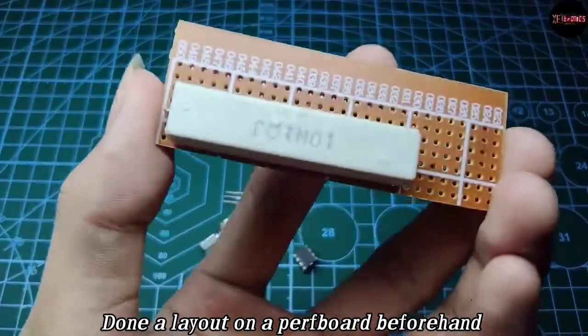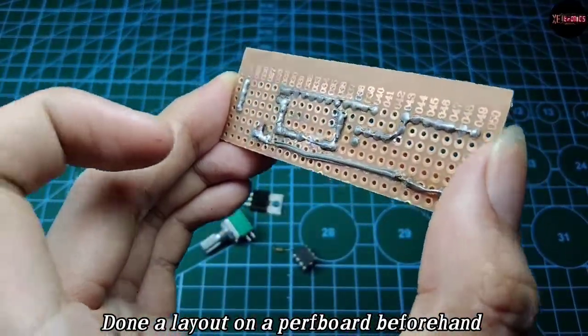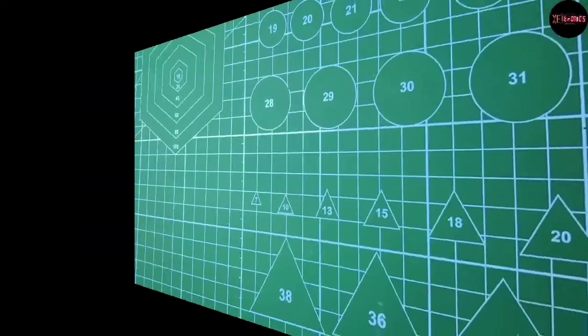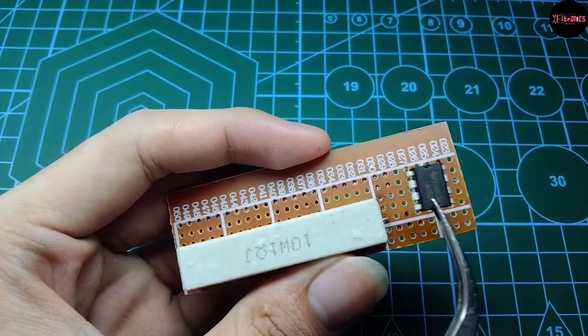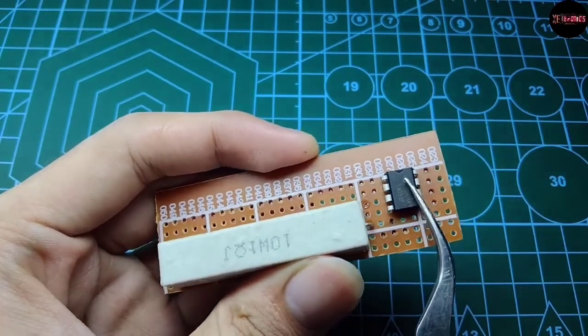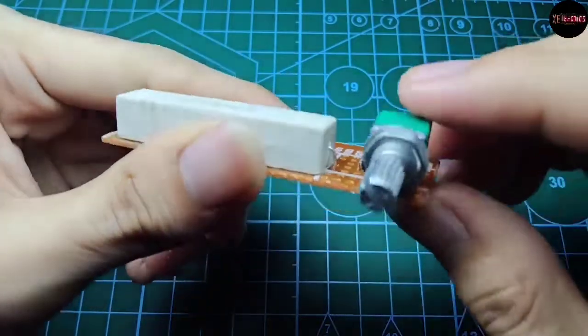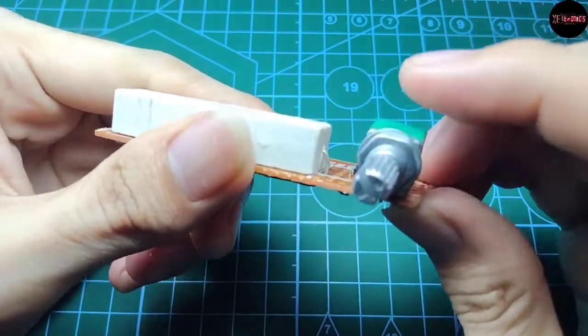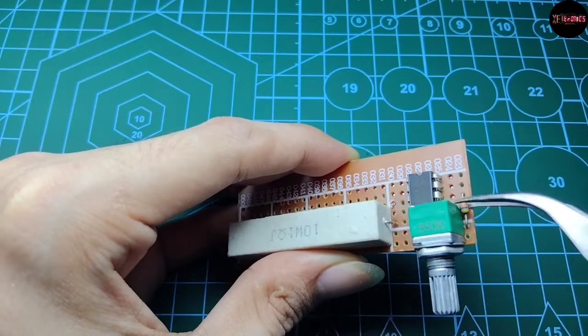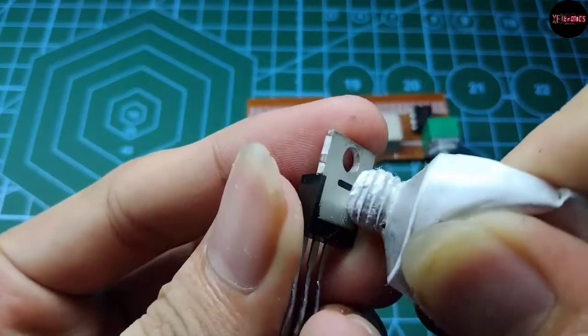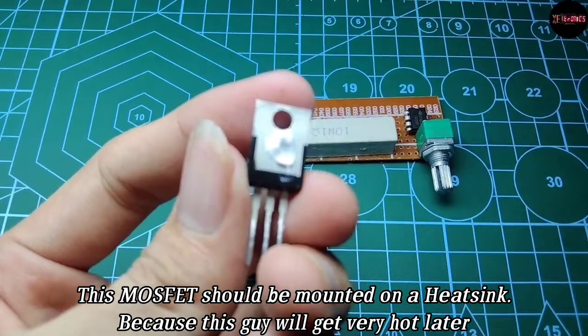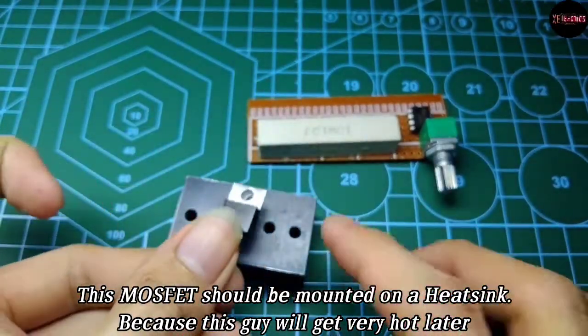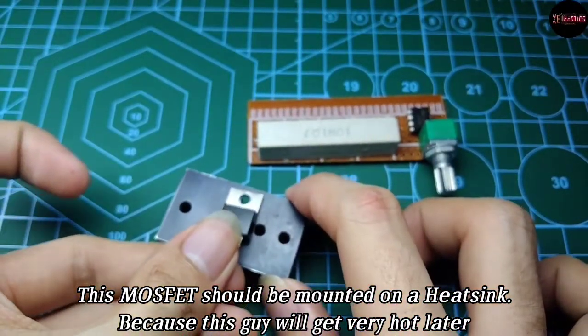I've already done a layout on a perf board. This is the schematic diagram by the way. Lay everything out based on that schematic provided. As for the MOSFET, this MOSFET should be mounted on a heatsink because this guy will get very hot later.